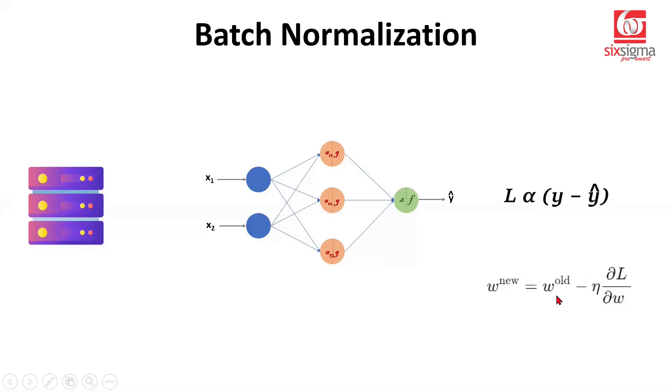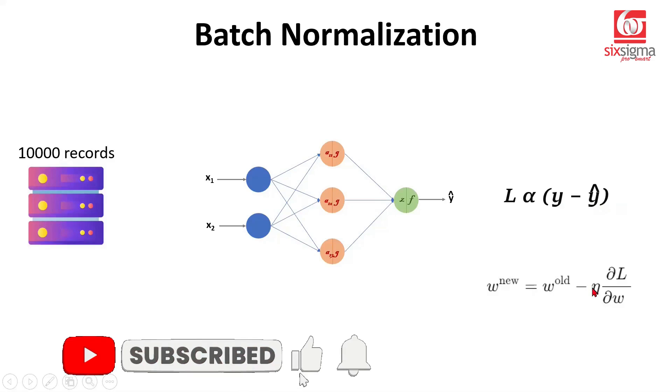Once the loss is calculated, we go about updating the weights and biases. Now, the question is, at what stage should the neural network calculate the loss and update the weights and biases? Let's say we started with 10,000 records. Should we calculate the loss for every single record and update the weights and biases accordingly? Or should we pass the entire data like 10,000 records and at the end of it, we should calculate the overall loss and accordingly update the weights and biases?